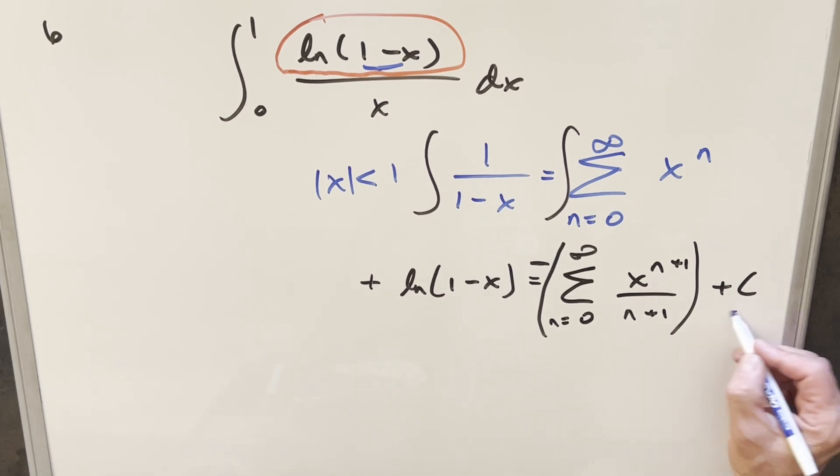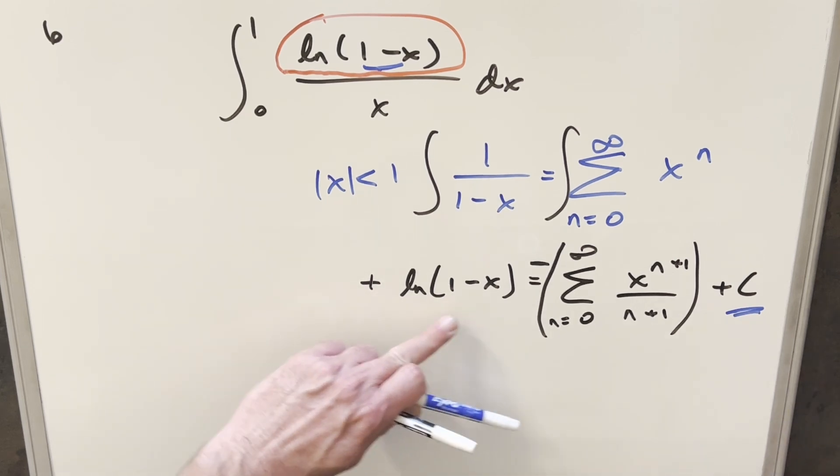But now we'd like to know what this plus c value is going to be because we don't really want that as part of our problem. We've got a definite integral. Well, it's going to be pretty easy to deal with just because we have some known values of the function on the left.